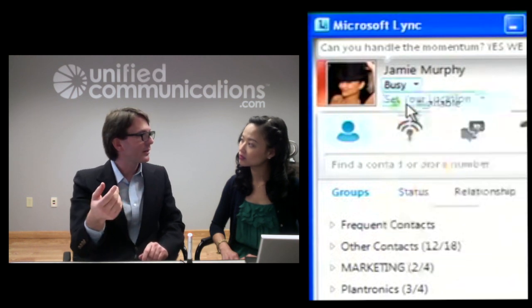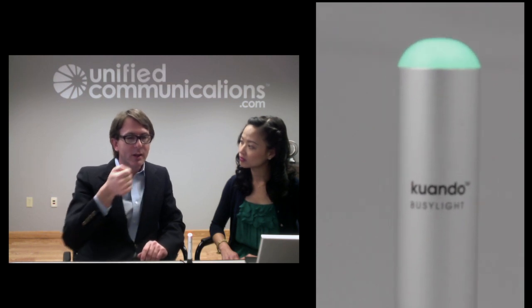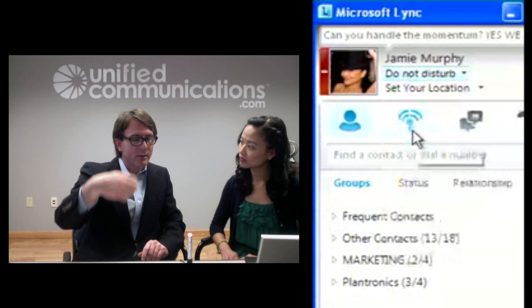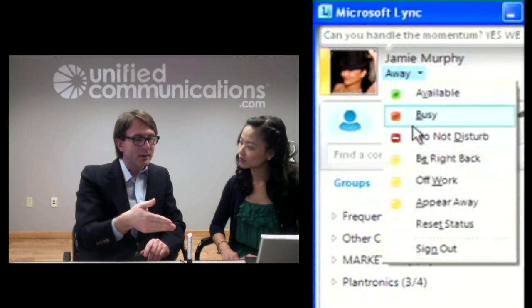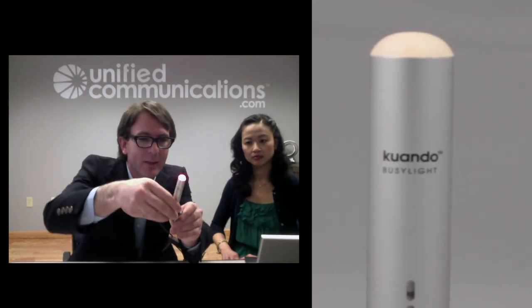So the BusyLight UC actually takes your Link status and displays it to people in your office. You can have it on your desk, on your monitor, or pointing from your cubicle. It's a very flexible device that physically moves and has a way of mounting on the bottom. It shows multiple colors and displays your Link status to everyone — you can train them like a Pavlovian dog.